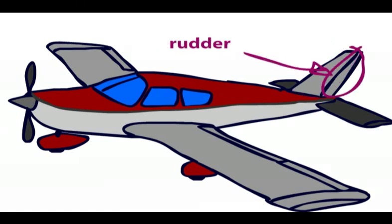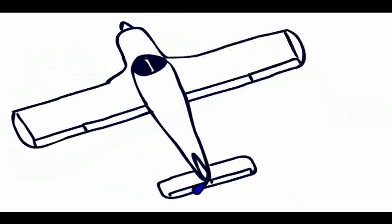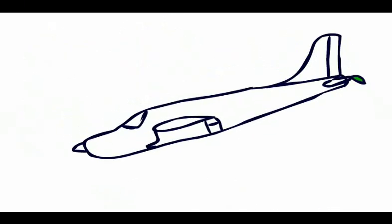The empennage is also made up of the rudder which controls the aircraft in yaw, and the elevators, which control the aircraft in pitch.